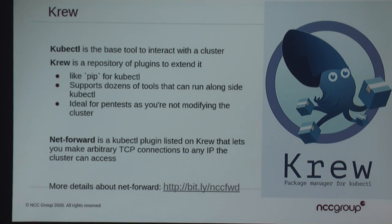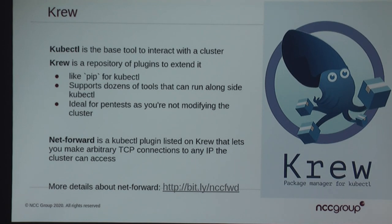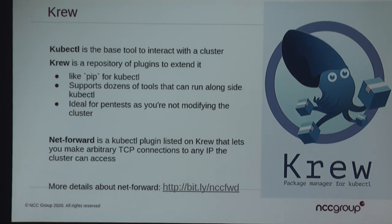This is a good opportunity to mention krew. Krew is like pip for kubectl. kubectl is the binary that interfaces with the Kubernetes API, and krew has about 40 to 50 different tools that automate common steps. That long SoCat string I just ran — I wrote a tool for krew called net-forward that allows you to give it arbitrary IPs and arbitrary ports into the cluster. It's open source and inside krew right now: kubectl krew install this plugin, and it automatically pulls stuff down. The value for pentesters is that it's not deploying anything into the cluster — you're not affecting production — you're just running tools on your own laptop that help speed up exploitation.